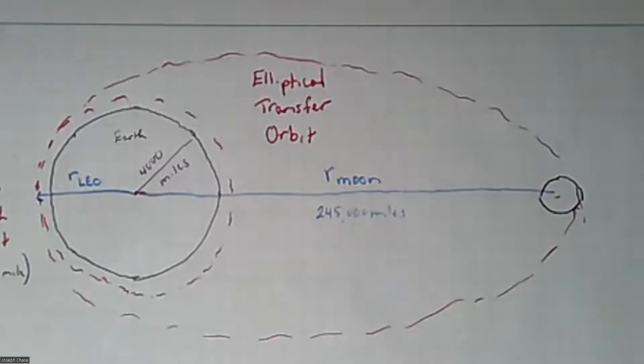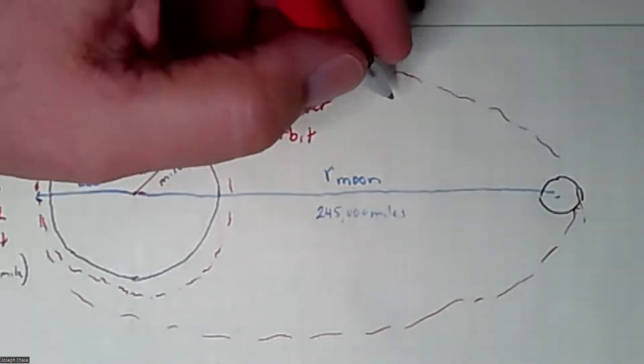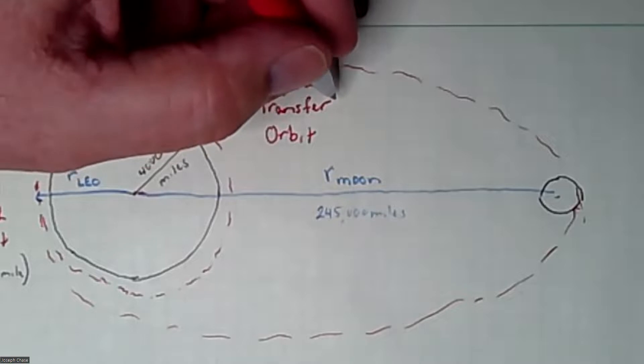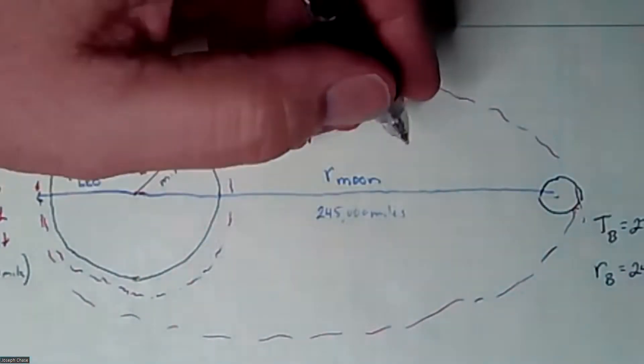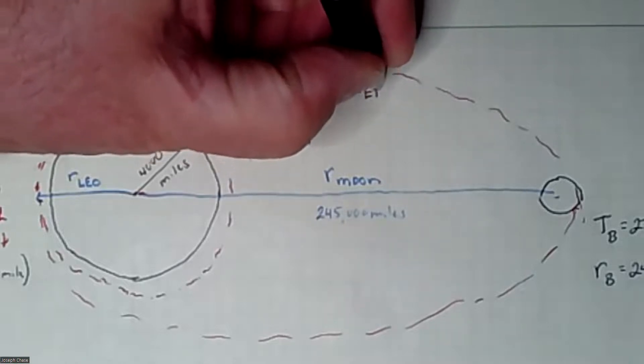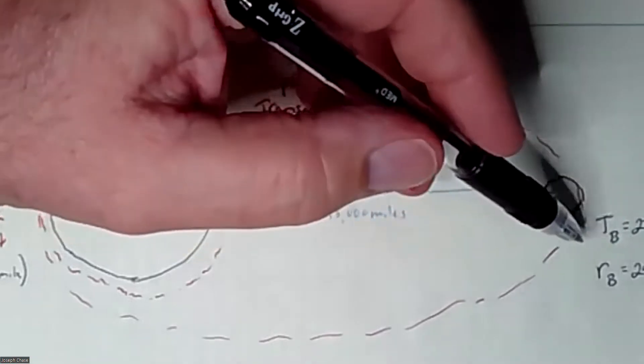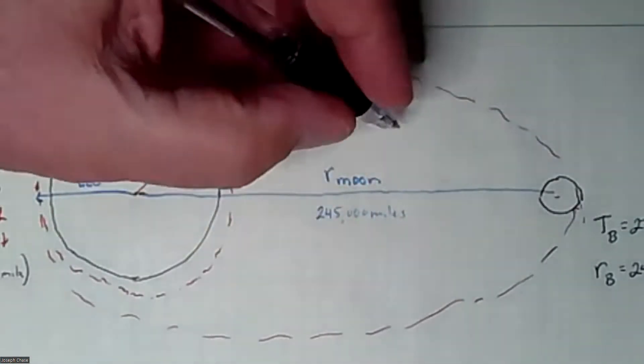And then we're going to transition to an elliptical transfer orbit. And from there, you can use Kepler's third law to figure out the period of that and its radius. So the characteristic of the moon, if we're going to compare this to the moon, then the period for the moon T_moon is equal to 27.3 days. And the radius of the moon is 245,000 miles. Now, we need the period for our elliptical transfer orbit, which we can get from Kepler's third law, if we know this and the radius of the elliptical transfer orbit.